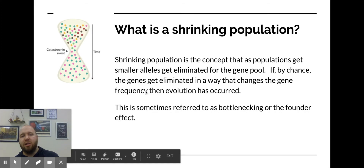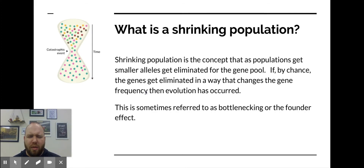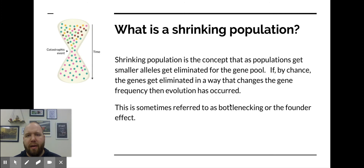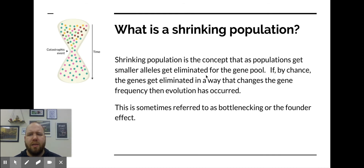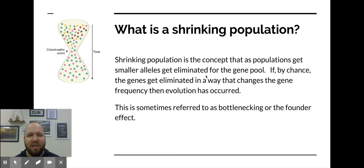Shrinking populations is the concept that random events that occur in the world can cause populations to go from being much larger to very, very small. This is called a catastrophic event. This flow is called bottlenecking. What happens after a bottleneck is called a founder's effect, but we'll talk about that one later. Basically, the great complexity and diversity of an entire population gets simplified down to just the survivors of this catastrophic event, and that changes the gene frequency.